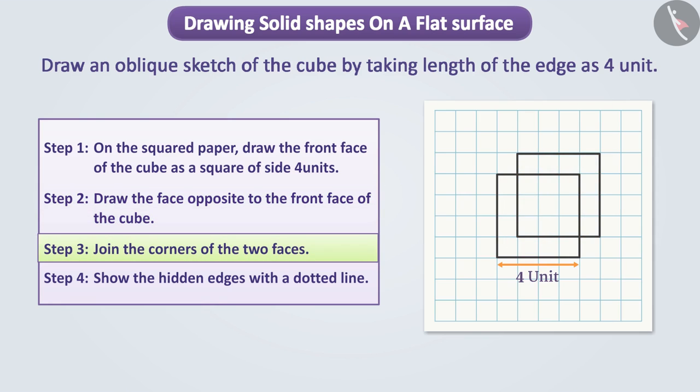Step 3. After this, we will join the corresponding corners of the two squared faces. Step 4. Now we will show the hidden edges with a dotted line. This is a convention that we follow.